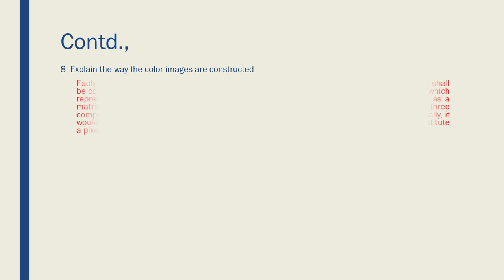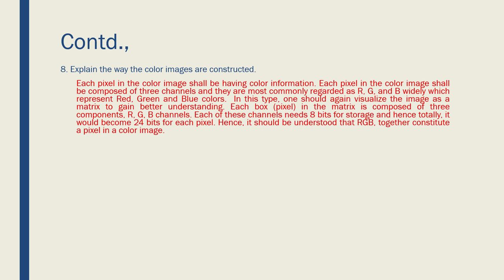Explain how color images are constructed. Each pixel in a color image has color information and is composed of three channels: R, G, B — Red, Green, and Blue. Each of these channels requires 8 bits of storage space. So 8 + 8 + 8 = 24 bits of storage are needed per pixel. RGB together constitute a pixel in a color image, requiring 24 bits per pixel.